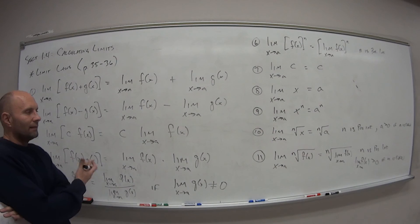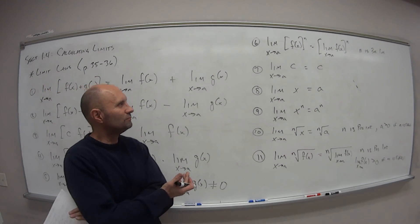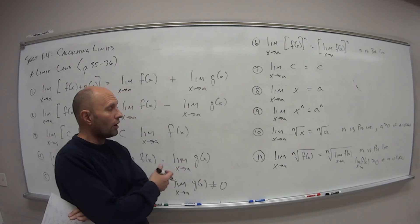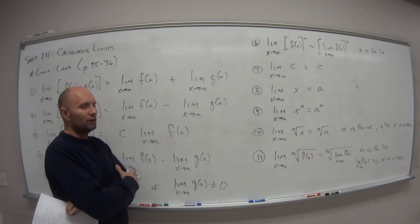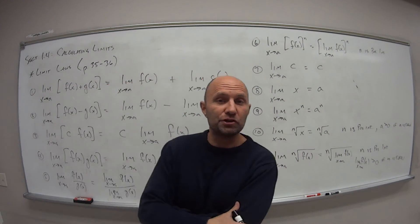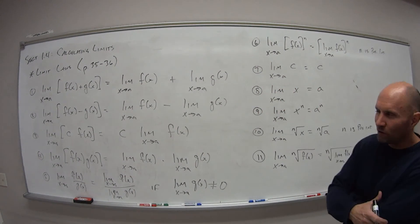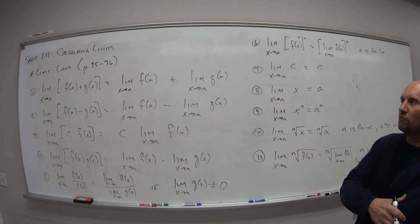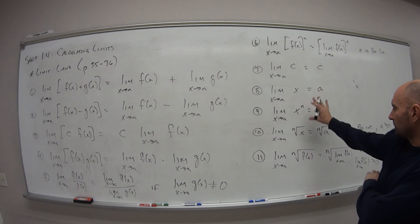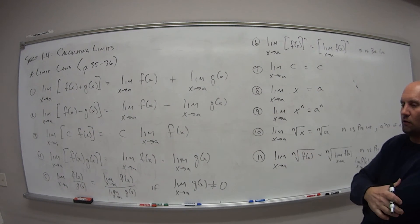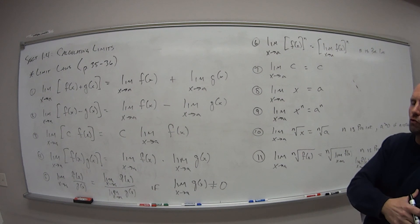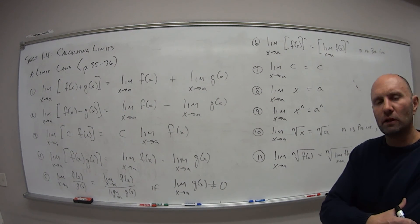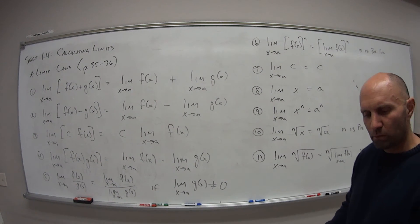So again, you've got 11 different formulas, different laws technically. So hopefully you have a little cheat sheet going or a reference sheet. I'd have these on there. Most of them, again, pretty straightforward, but maybe some of these, if we start getting into some limits, we'll be able to utilize them. So come on back, we will look at video two for section 1.4.